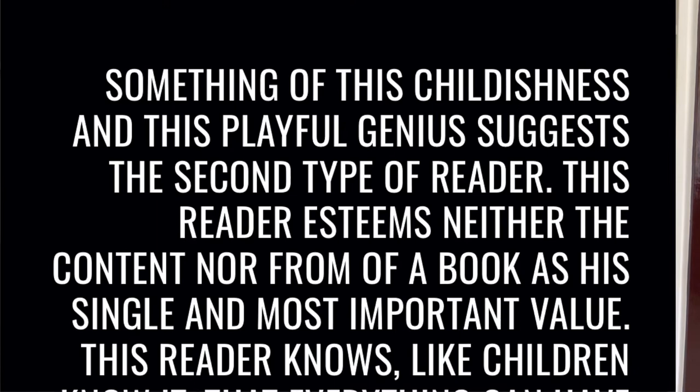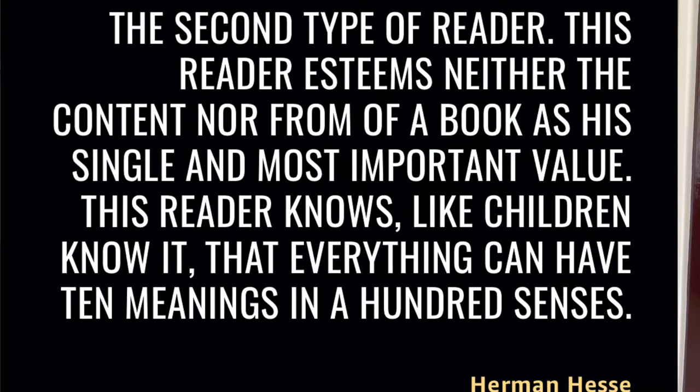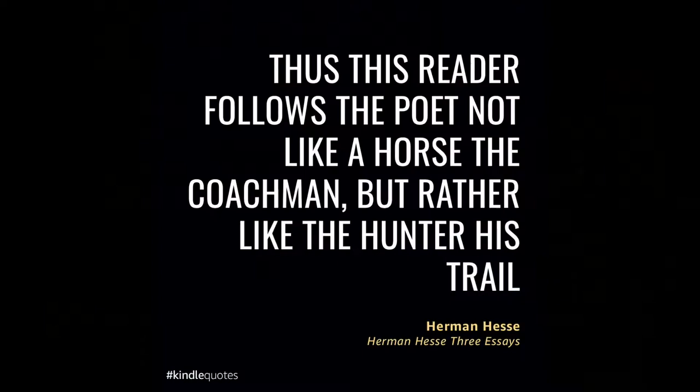What Hesse argues is that the second style of being a reader arises out of our childishness and our playfulness. The book almost becomes a tool for our flights of imagination, flights of interpretation. We start to become a little bit more free from the dominant, established interpretation of the text. Hesse writes that this second type of reader follows the poet not like a horse the coachman — not with total suspension of disbelief — but rather like a hunter, his trail.